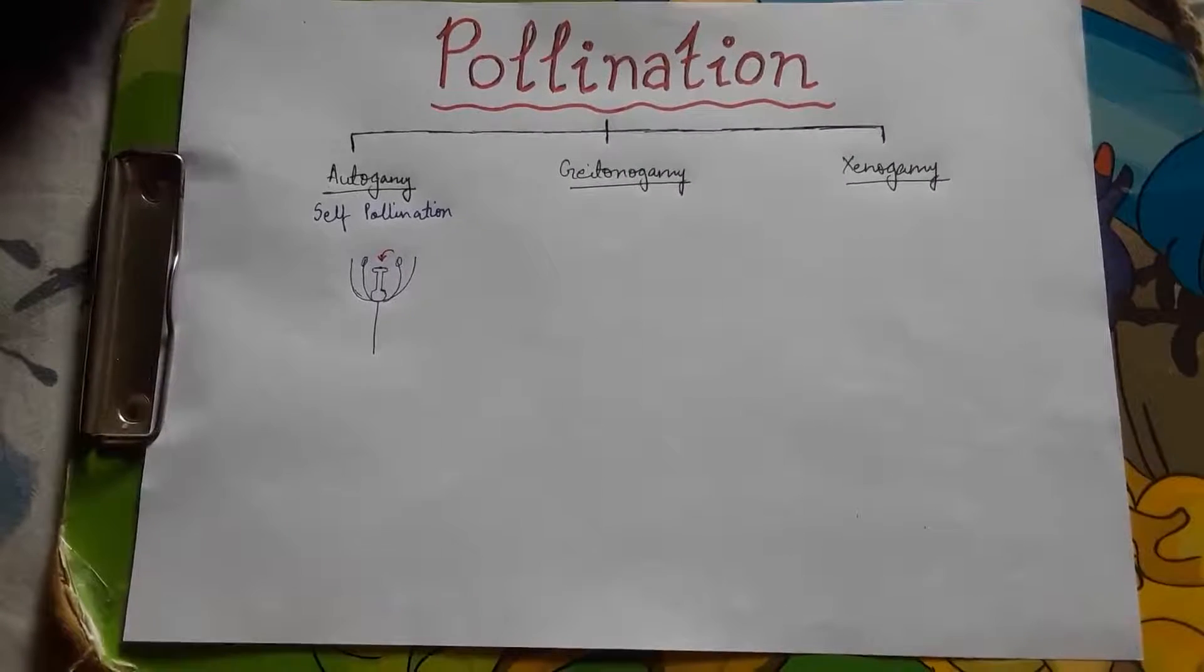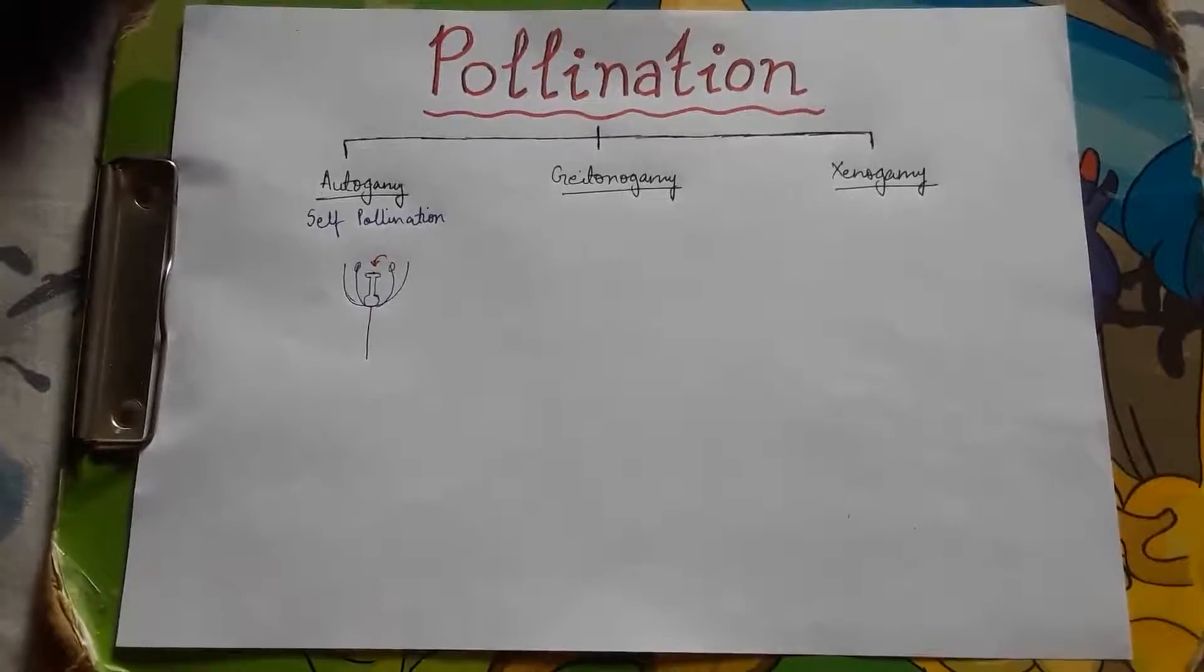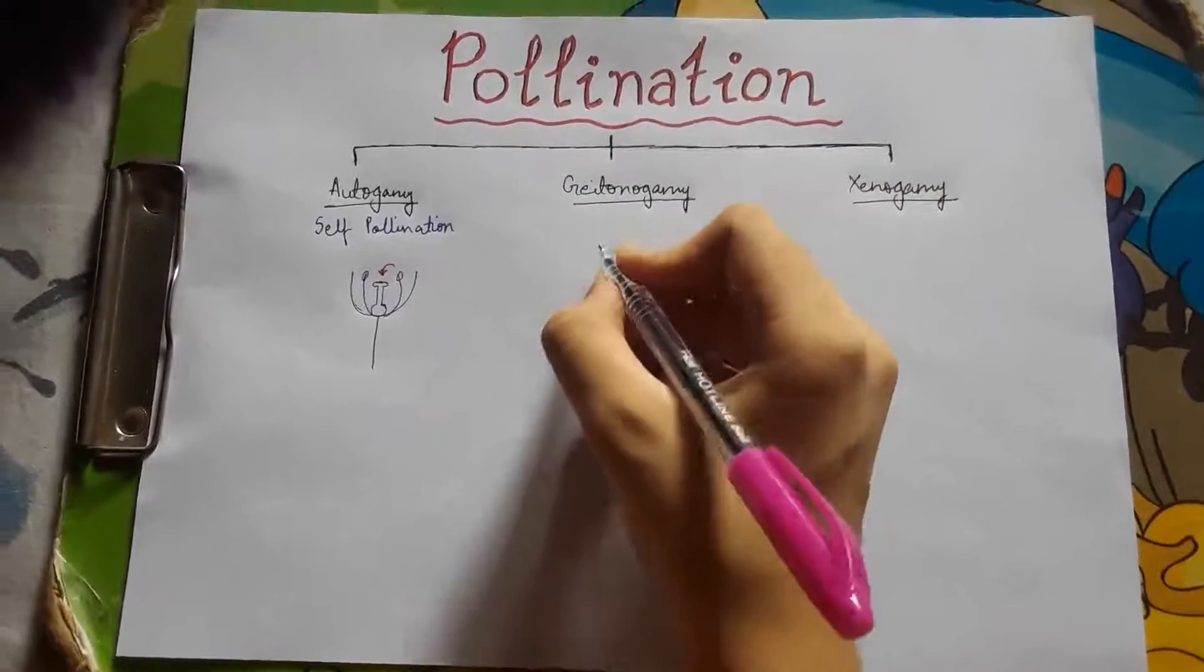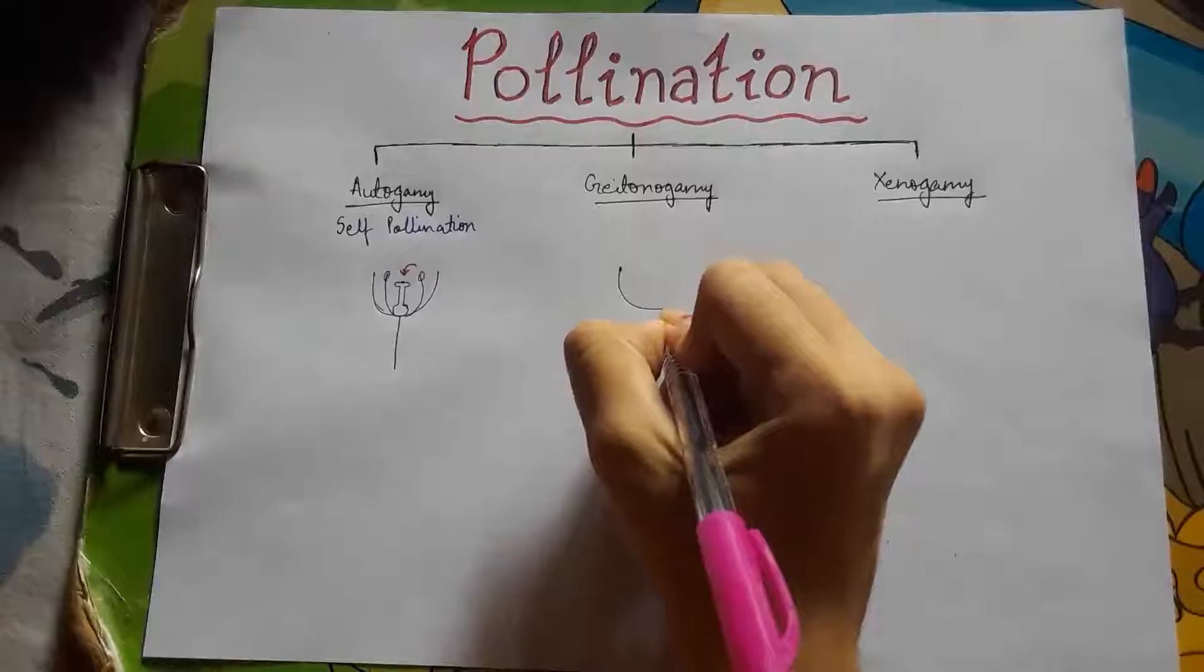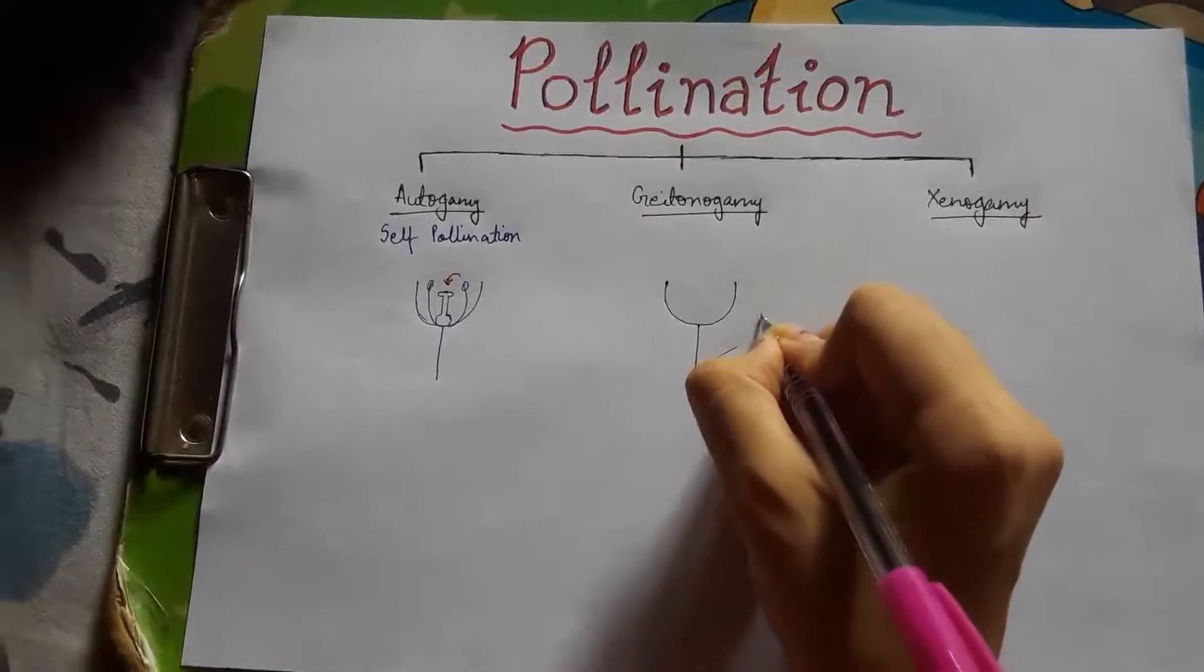Next is geitonogamy, which is transfer of pollen from anther to stigma of another flower on the same plant. So let me show you. This is the flower, and this is another flower.